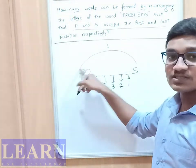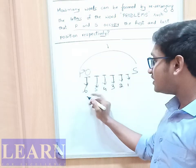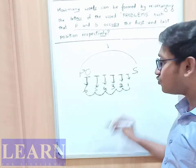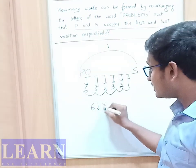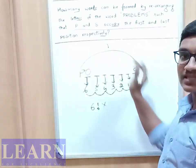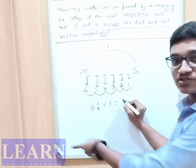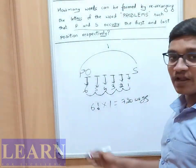Now we need to arrange, so P and S - the only one possible, there is only one possibility. This is first and last. If I observe these in between P and S, we can arrange 6 × 5 × 4 × 3 × 2 × 1, which is nothing but 6 factorial. 6 factorial, and P and S can apply only one arrangement, which equals to 6 factorial × 1 = 720 ways.